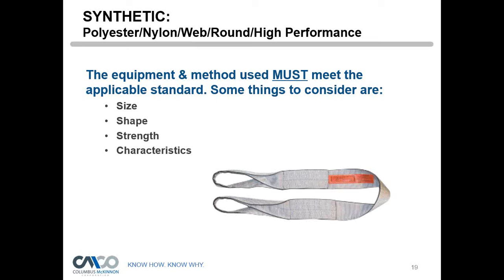If the DOT pulls you over and cannot find a grade level on the chain, they will automatically assume it is grade 30. In some cases, they will take you out of service because you don't have enough tie-downs — even if you're certain the chain is grade 70 or 80, which has a higher working load limit. The DOT enforcement officer will say: 'I don't see a grade on there — it's grade 30 to me,' and he'll take you out of service.